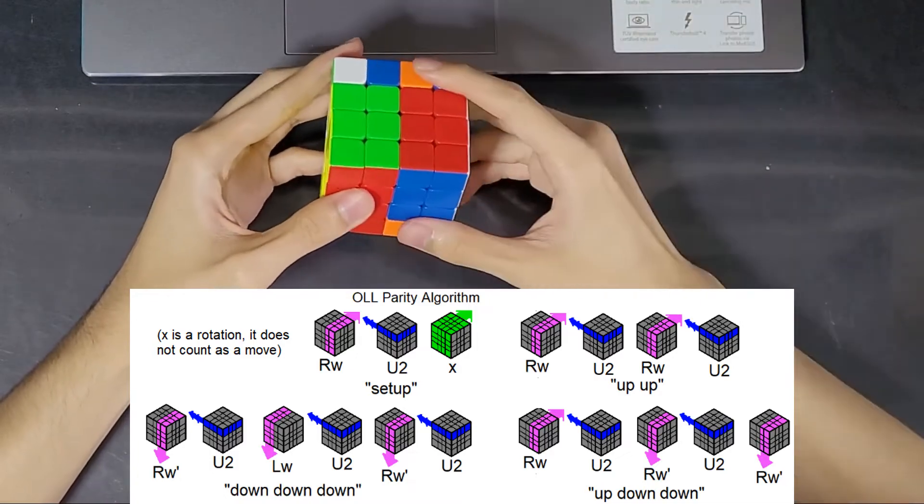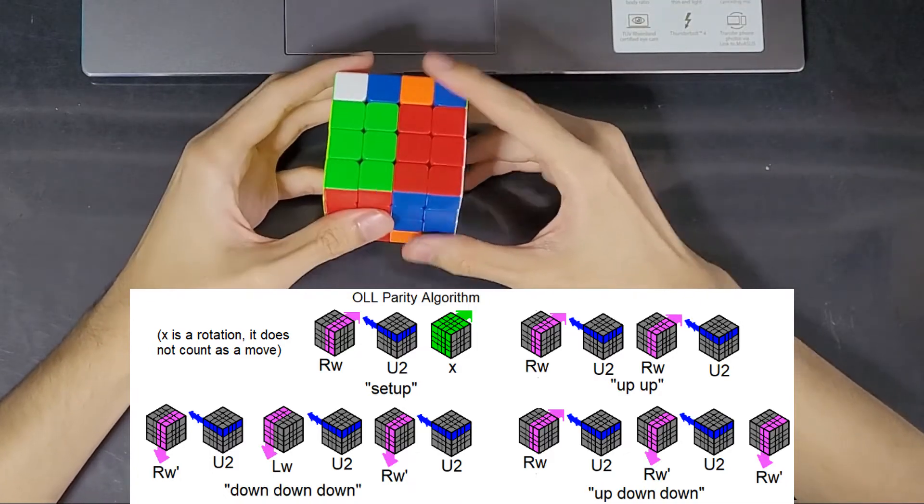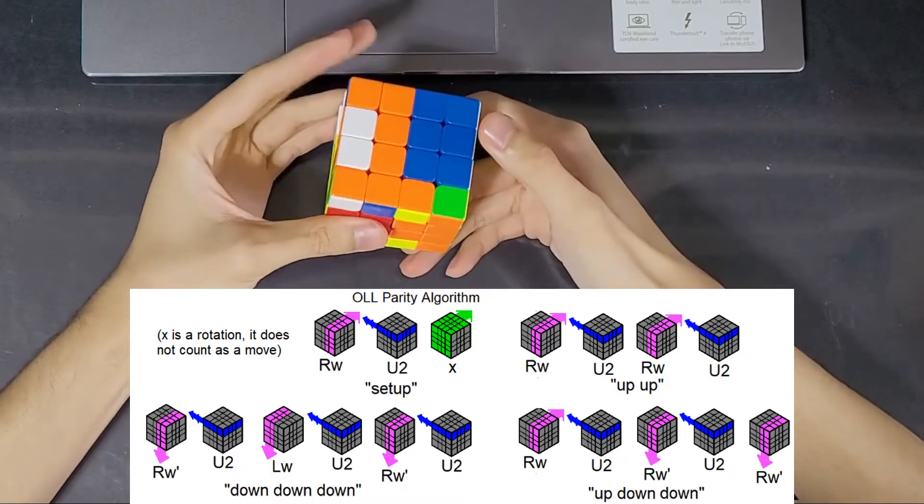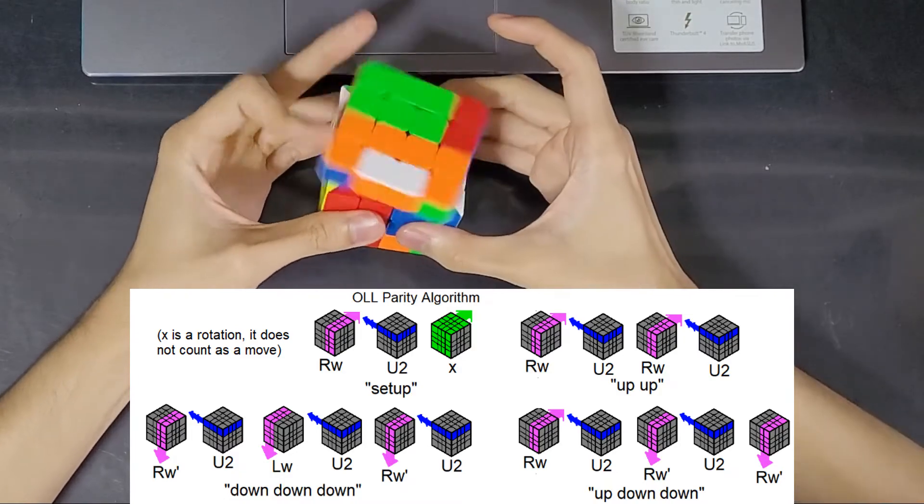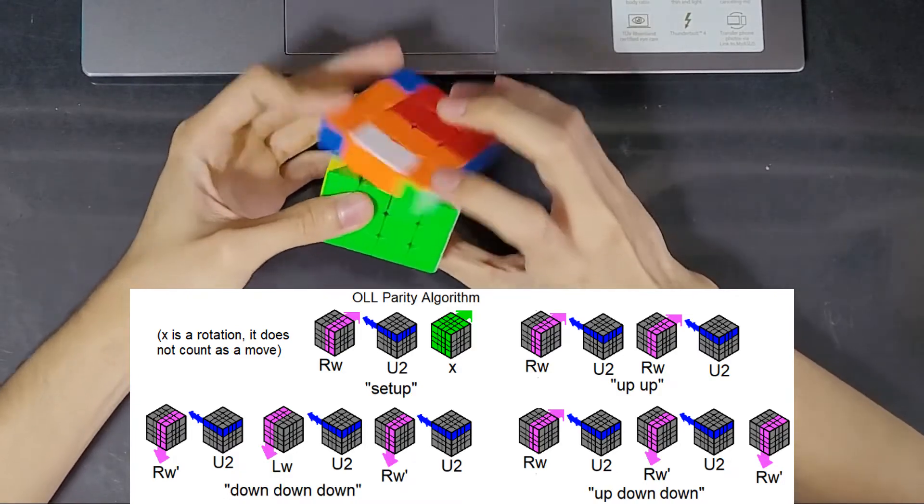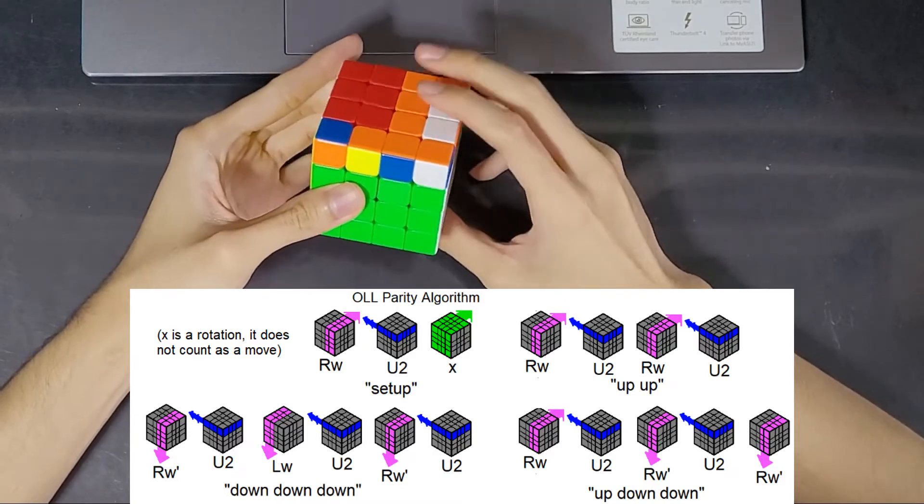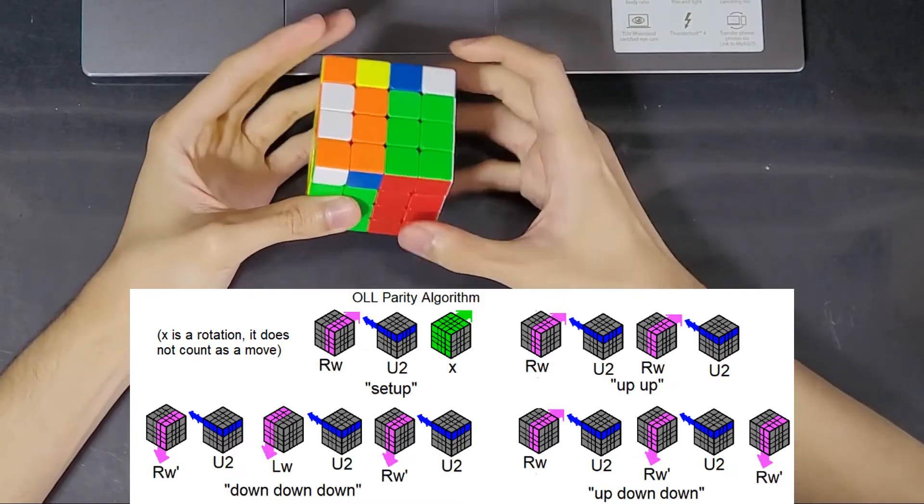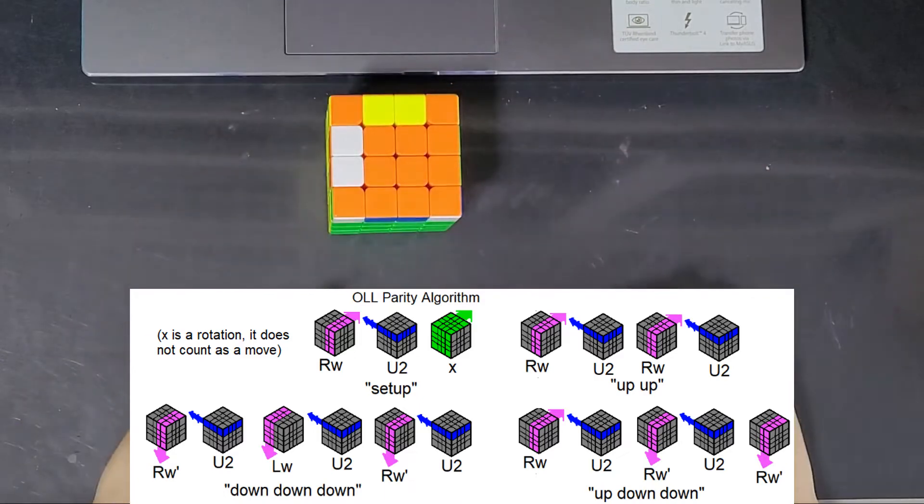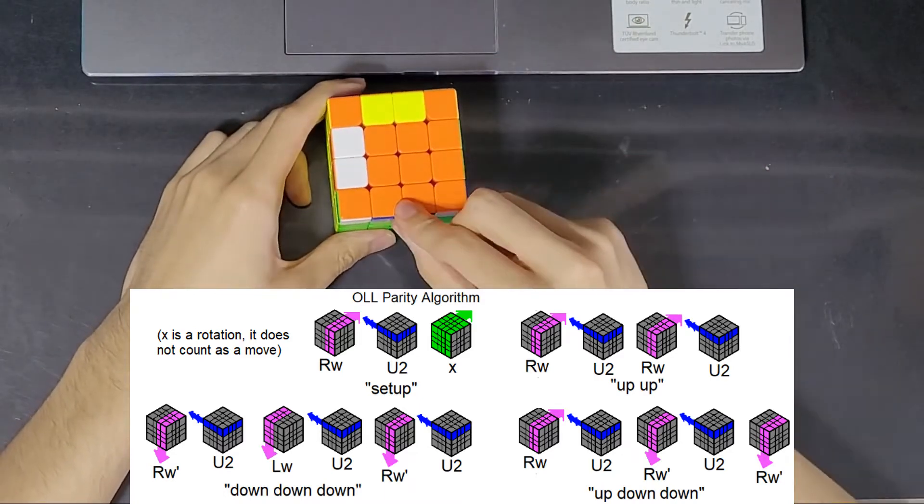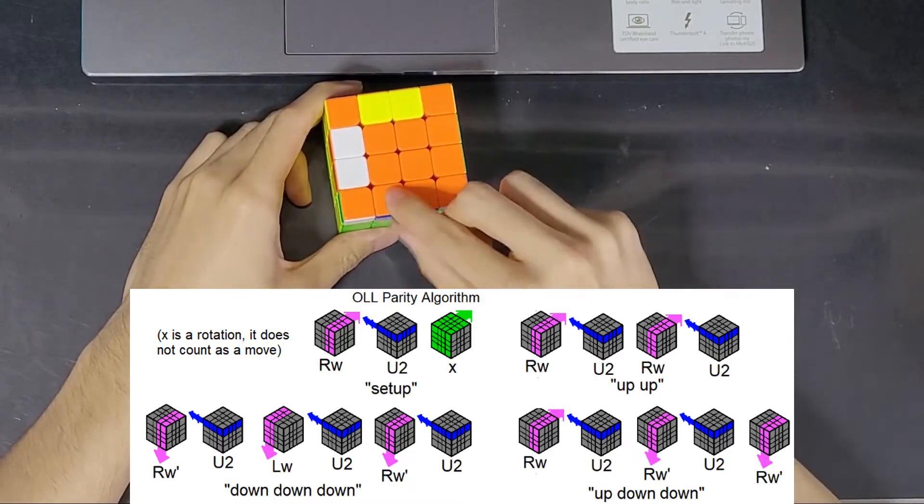The second part is up, up. The third part is down, down, down. And then the fourth part is up, down, down. And that will flip an edge that is right in front here.